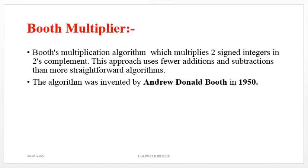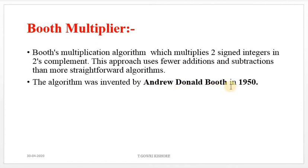The concept is Booth Multiplier. The Booth Multiplication Algorithm multiplies two signed integers in two's complement. This approach uses fewer additions and subtractions than more straightforward algorithms. It was invented by Andrew Donald Booth in 1950, which is why it is named the Booth Multiplier.